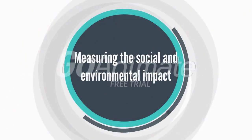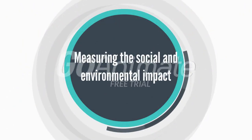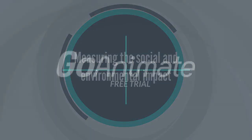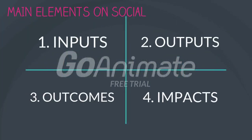Now let's talk about measuring the social and environmental impact. First and foremost is the social impact. There are four main elements when measuring the impact on social, which are inputs, outputs, outcomes, and impacts. Inputs are resources which are invested to make something happen. Outputs are the direct result of the business objectives or goals. Outcomes are a change in people resulting from the activity. Impact is outcome less an estimate of what would have happened anyway.